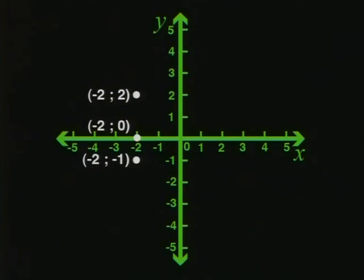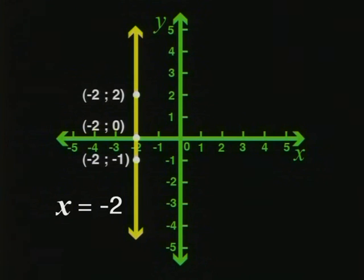Now here are three more points. They all have the same x-values, but they have different y-values. And if I joined them, they would also make a straight line.